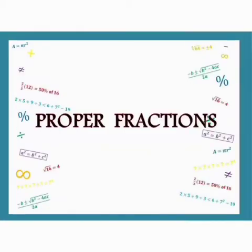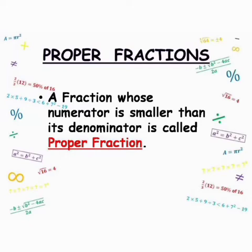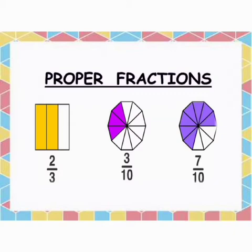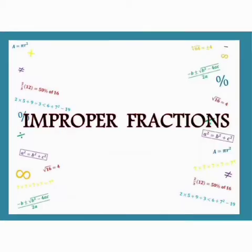Proper Fractions. A fraction whose numerator is smaller than its denominator is called Proper Fraction. For example, 2 upon 3, 3 upon 10 and 7 upon 10 are Proper Fractions, because all the fractions have their numerators smaller than corresponding denominators.